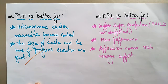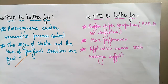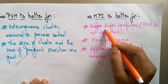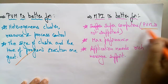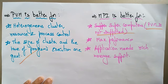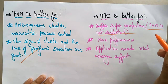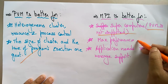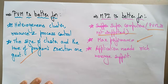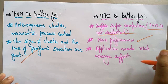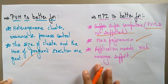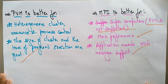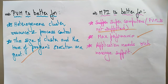MPI is better for supercomputers — supercomputers are not supported well in PVM. MPI is also better for maximum performance and when an application needs rich message support. These are the different features and characteristics of PVM and MPI.